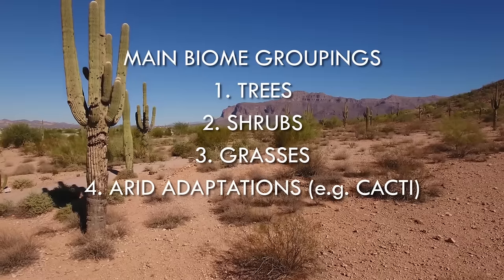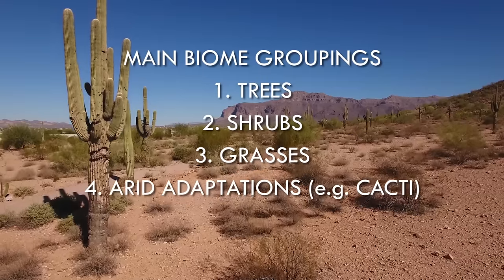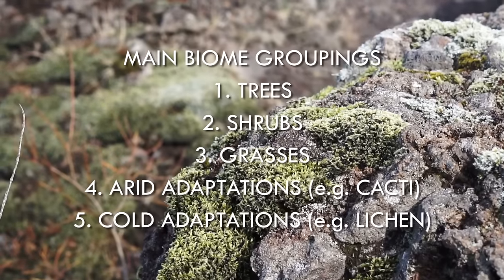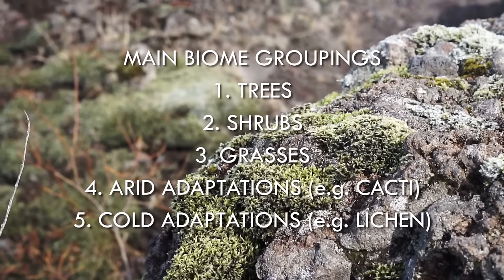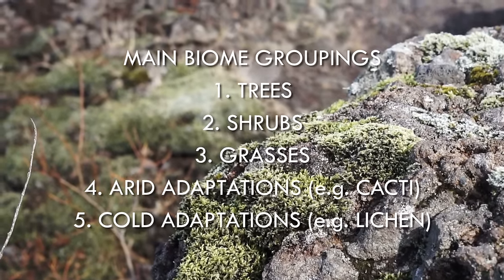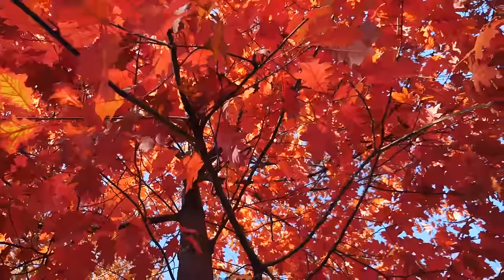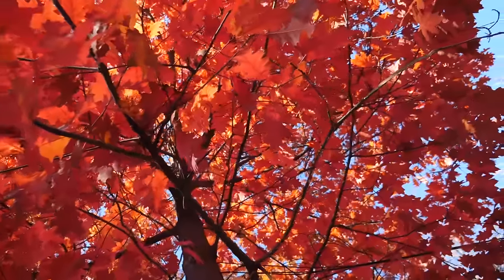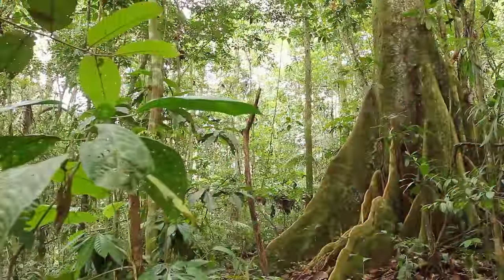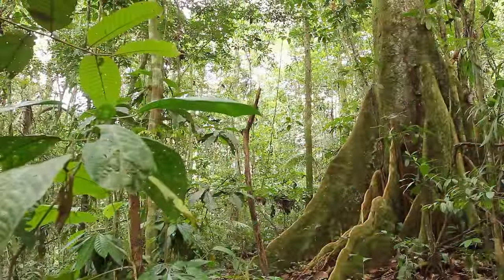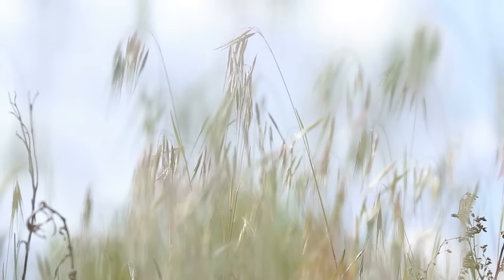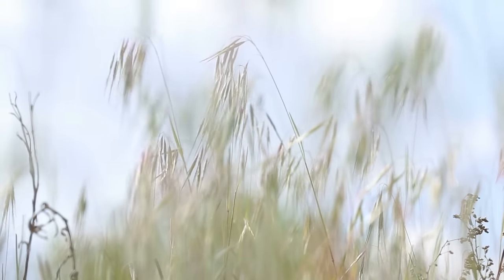Desert adaptations, with cacti being the most well known. Very cold adaptations, such as found in tundra. These adaptations span the basic classes of plants in terms of evolutionary heritage. For instance, the class of flowering plants known as angiosperms are found in every category as just described.